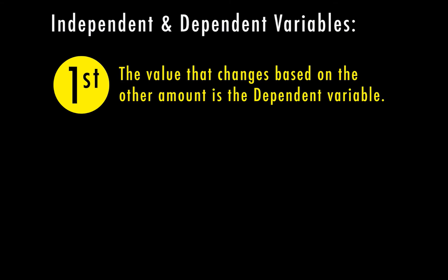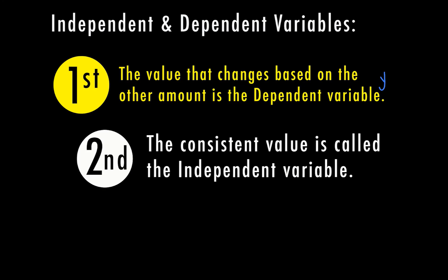Let's recap. The value that changes based on the other amount is the dependent variable — when one value depends on the other, we call that the dependent variable, and it's usually labeled by the y on your table or graph. The consistent value is called the independent variable — the variable that does not change based on what's happening with the other variable. Time is a great example: it's continuous and consistent no matter what, so the y value is the dependent variable and the x value is the independent variable.